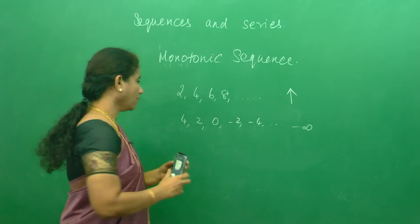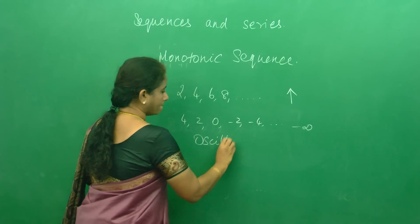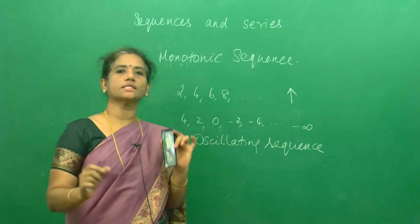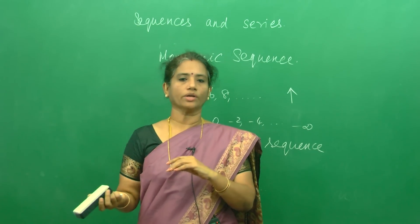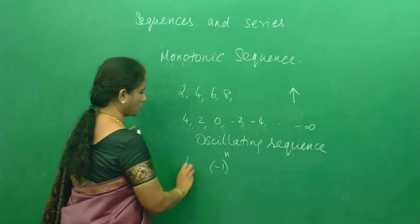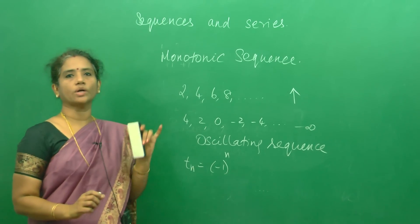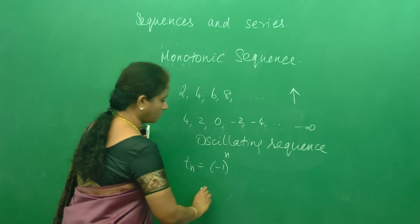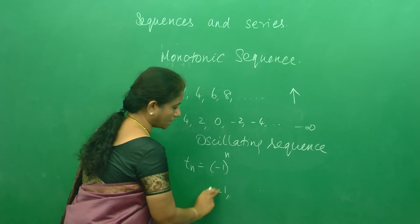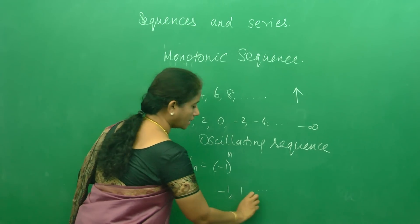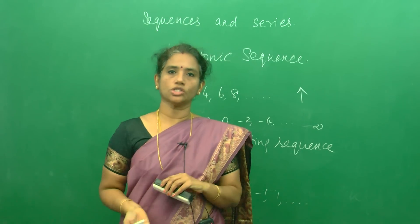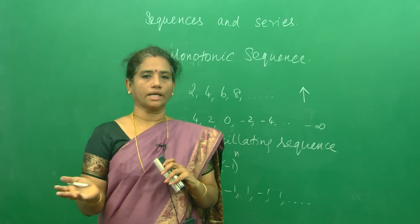Next we have one more type: the oscillating sequence. What is the meaning of an oscillating sequence? Oscillating means it goes this side and that side. Suppose the nth term of a sequence is (-1)^n. When n is 1 this is -1, when n is 2 it is +1, when n is 3 it is -1, when n is 4 it is +1, and it goes on. So you cannot conclude whether the sequence converges or diverges because it is oscillating.